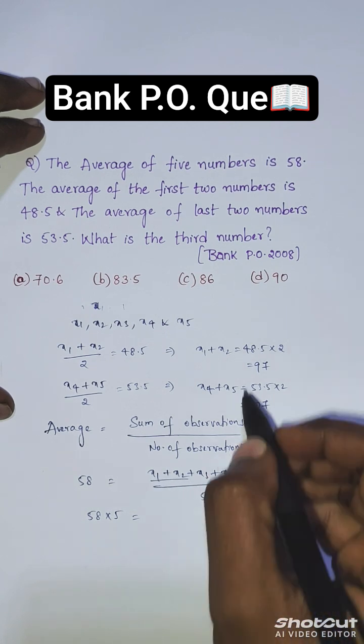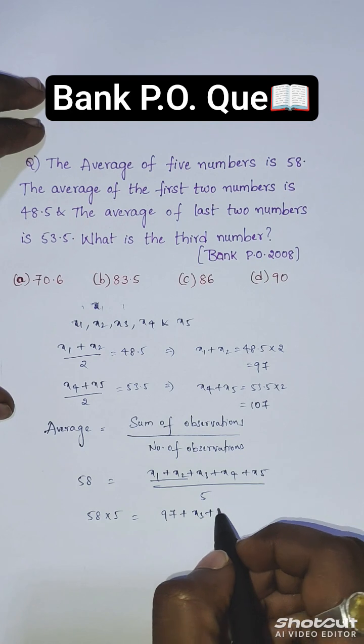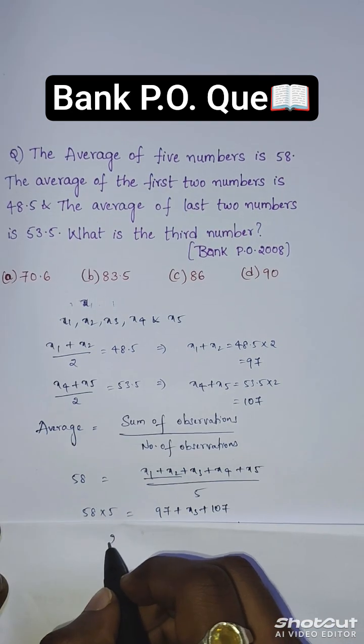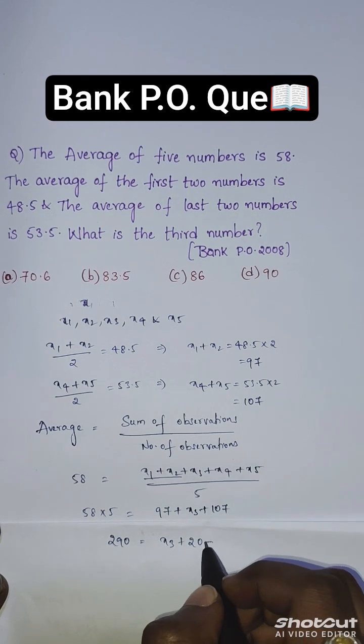We know that x1 + x2 = 97, and x3 we don't know. x4 + x5 = 107. This comes to 290, which equals x3 + 204.